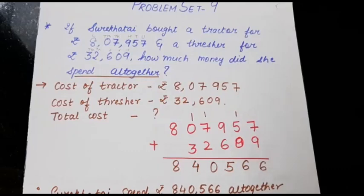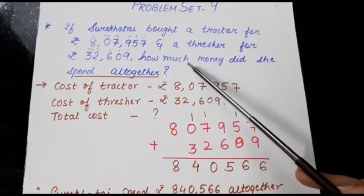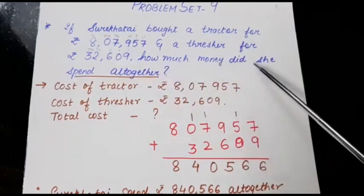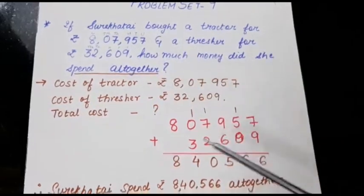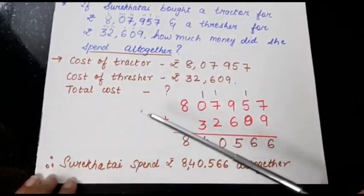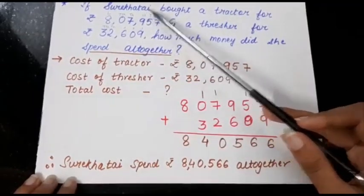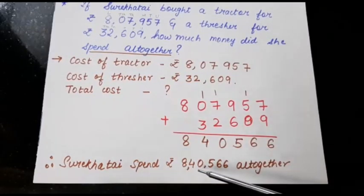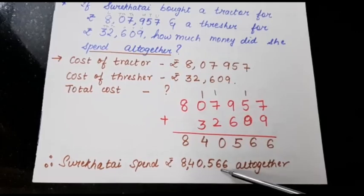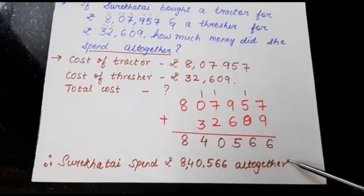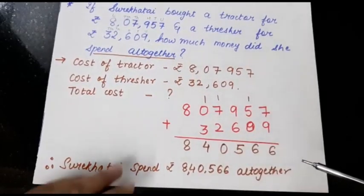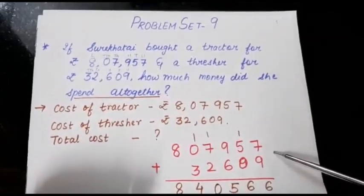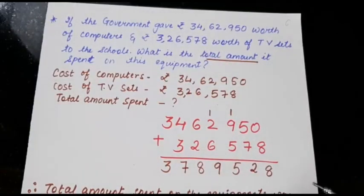After adding this we will get this number. So now we can write at the end that is what is asked in the question how much money did she spend all together? Kitna amount usne spend kia dono mein? So we will write Surekha Thai spent rupees 8,40,566 all together. Now this way there are other sums also that you will solve in your rough book and practice. Let's look at the next sum.